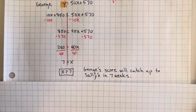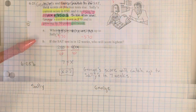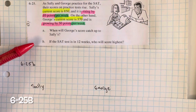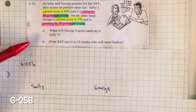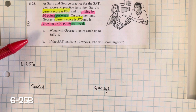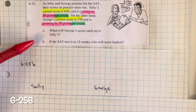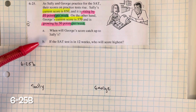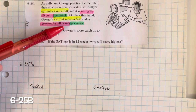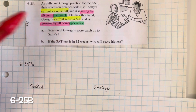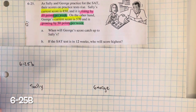George's score will catch up to Sally's in 7 weeks — that's when they will have the same score. For part B, if the SAT test is in 12 weeks, who will score highest? We need to determine if x equals 12 who will have a higher score.